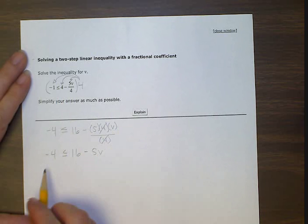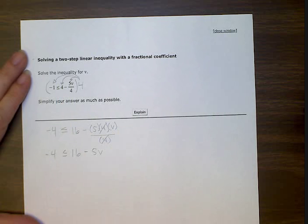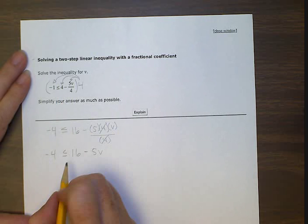So now we have minus four is less than or equal to 16 minus five v. So to simplify, we want to get our whole numbers together. We don't have any more v's to combine with, so we'll just try to get this 16 with this minus four. So let's do that.